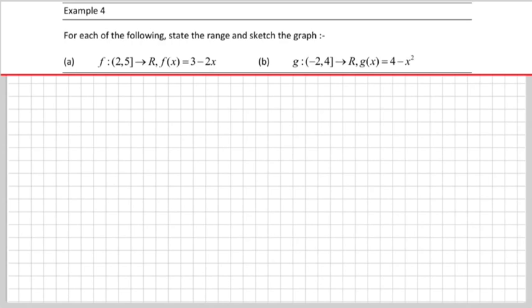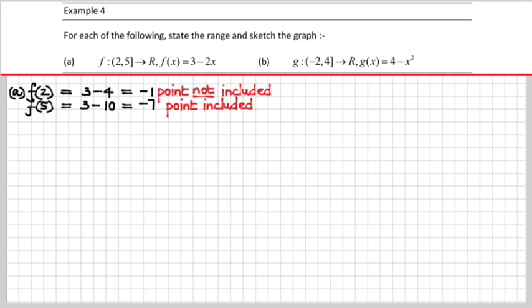And you will find that when you work out the range, the order of the round and the square, when you quote the range, will be reversed, which is they're trying to do your head in, guys, but don't let them. So I'm saying f of 2 would be 3 minus 4, which would be minus 1, and f of 5 would be 3 minus 2 times 5, or 3 minus 10, which is minus 7. Now, that point is not included. That's right, and this point is included.